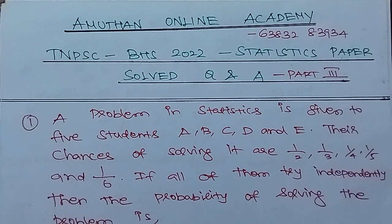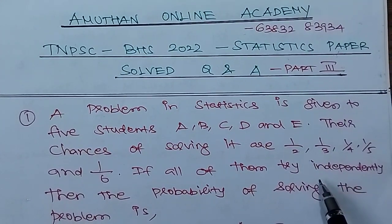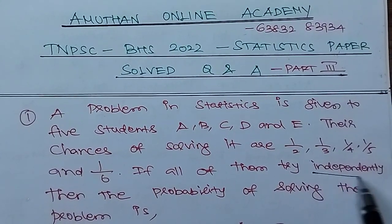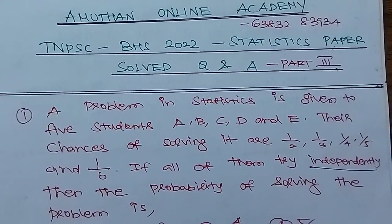In one video, a problem in statistics is given to 5 students A, B, C, D. Their chances for solving it are 1/2, 1/3, 1/4, 1/5, and 1/6. If all of them try independently, then the probability of solving the problem is...